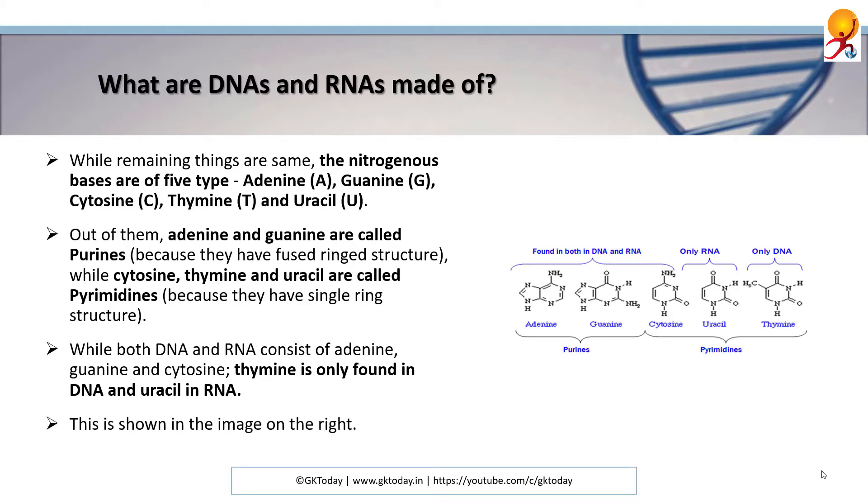This is shown on this image on the right, as you can see both adenine and guanine, which are purines, found in DNA and RNA. In RNA you can find uracil, and in DNA you can only find thymine.